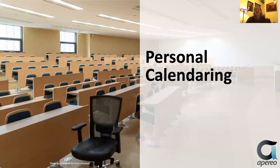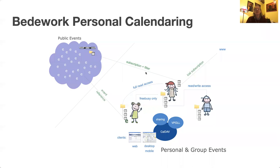We have personal calendaring as well — it's fully functional. Some places are using it. The original intent was that personal calendaring and public events would be more related, but there are a few places that run both. There are some places that run personal calendaring, a lot that run public, but few that run both. We did have this idea of subscribing to public events from the personal calendar and referencing single events from the personal calendar, but that's a little-used feature.